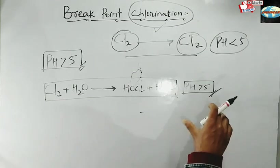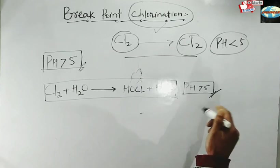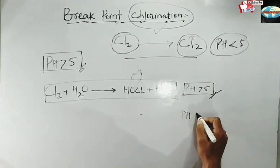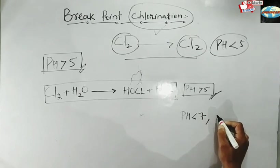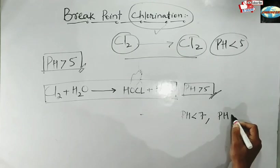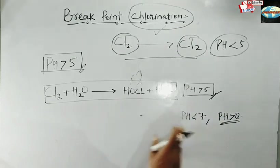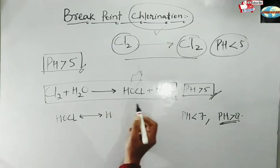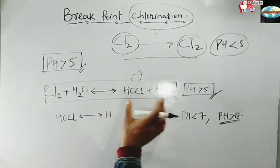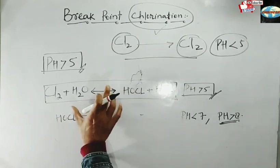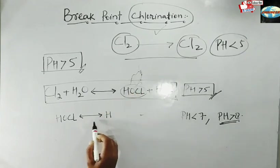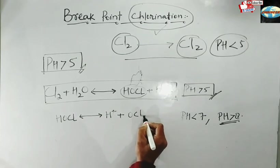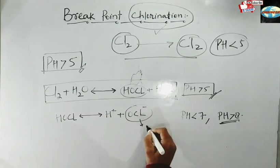Now, pH is not a constant property — different water samples have different pH. If you have pH between 7 and 8, the following reaction will occur: HOCl undergoes a reversible dissociation, maintaining equilibrium. Hypochlorous acid (HOCl) dissociates into H⁺ and OCl⁻, which is called the hypochlorite ion.